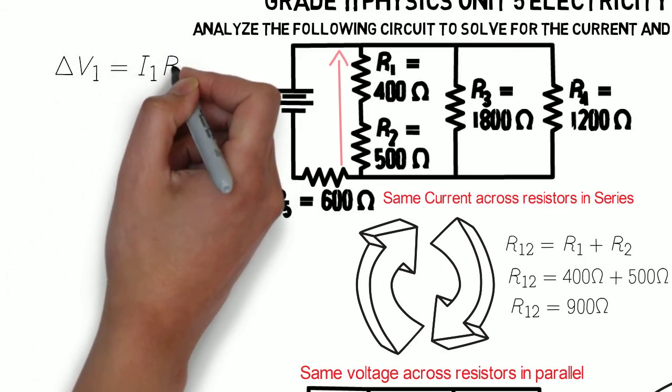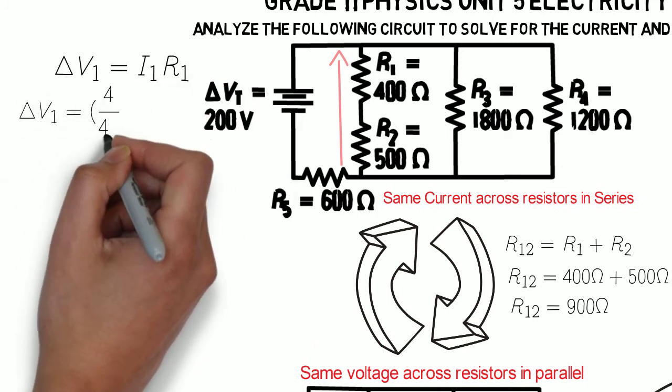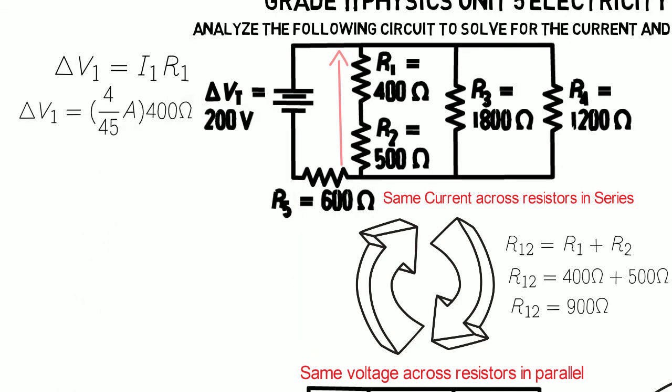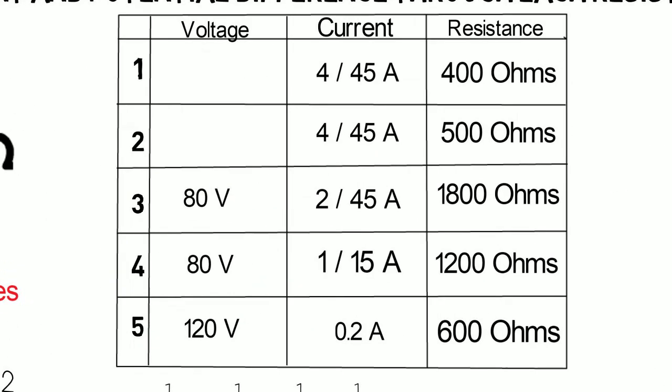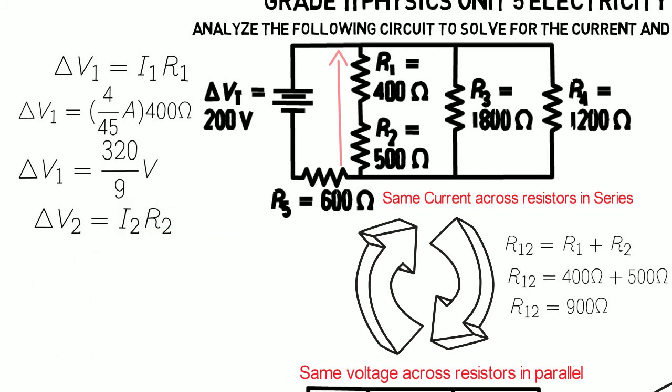Knowing that, we can once again go back and use Ohm's law to solve the potential difference through both resistors. And we finally get the potential difference through R1 to be 320 over 9 volts, and R2 to be 400 over 9 volts. And now we've found everything in the questions.